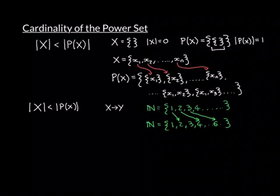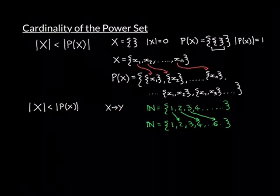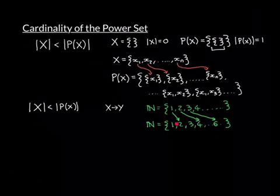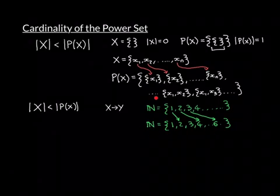So in infinite set theory, the way to prove that two sets have the same cardinality is the existence of a bijective map. And to prove the non-existence of a bijective map, it is not enough merely to show the existence of an injective map that is not surjective. And here is the proof that that is not enough.